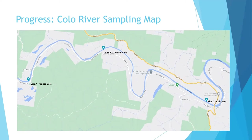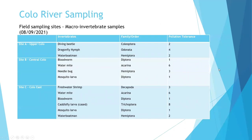The sampling map included here shows the three sites I've selected for sampling along the Colo River. I've already been to these sites and collected my samples, so I know they're good sites. The samples taken so far have been ordered into the three sites by invertebrate categories, water, and pollution tolerance.